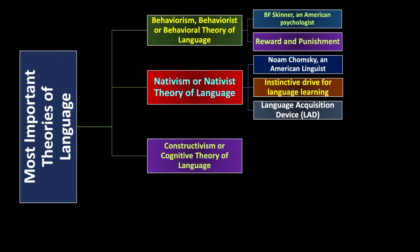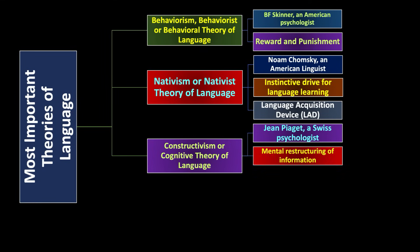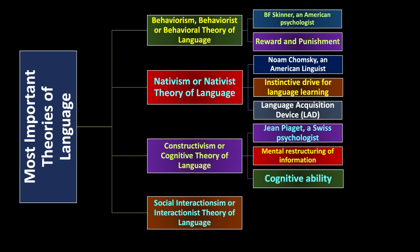The third theory is constructivism, or the constructivist theory of language. The person who talked about this theory is Jean Piaget, a Swiss psychologist. The most important element in this theory is the mental structuring of information — how we process information into our mind. This refers to cognitive ability and how cognition helps us in learning a language.